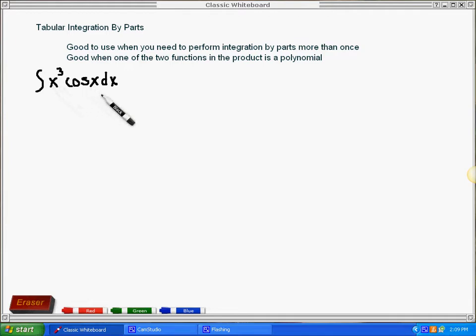If I am performing integration by parts on this example, I would want to let u be the x to the third part, which would leave what's left as the dv. The dv would have to be the cosine x dx.